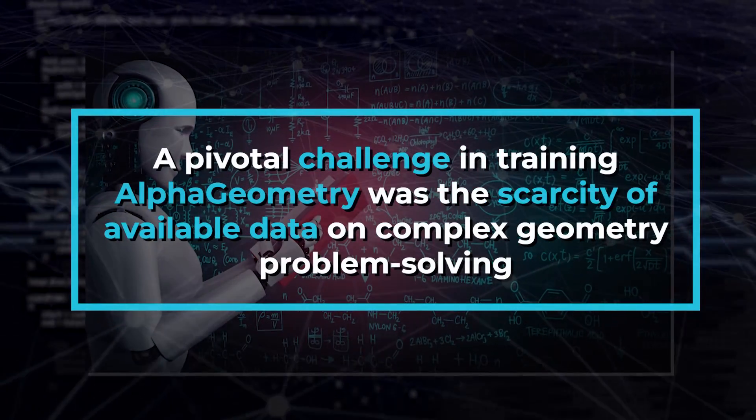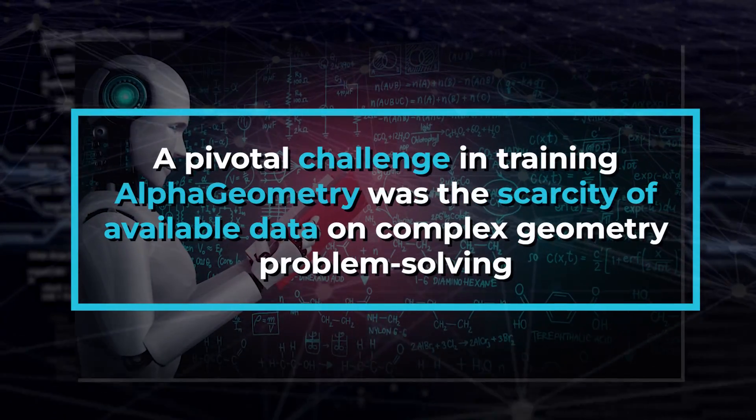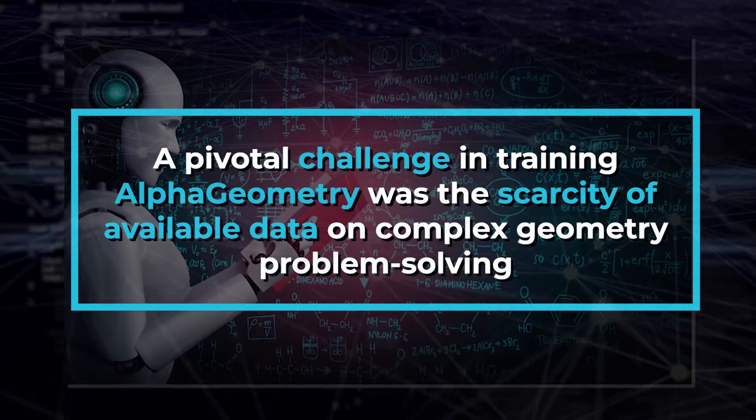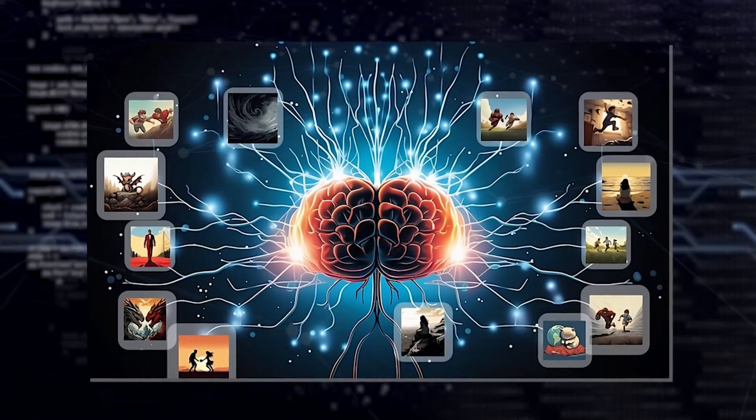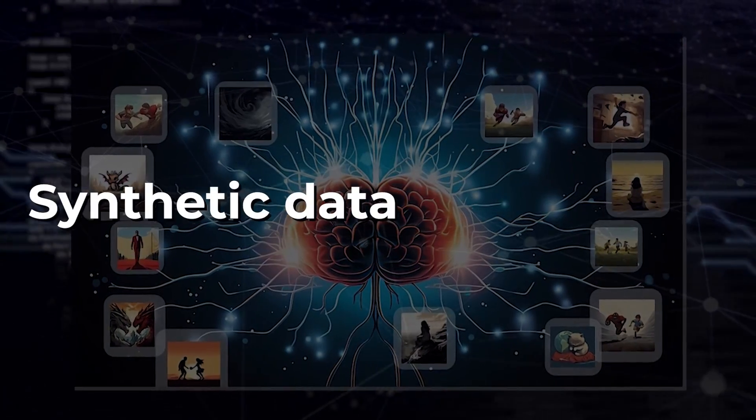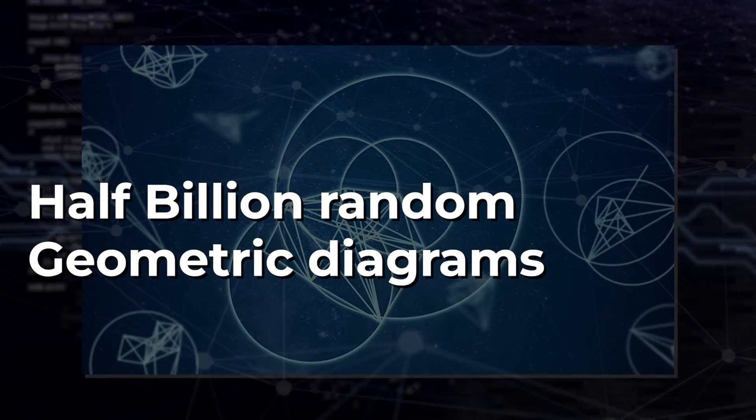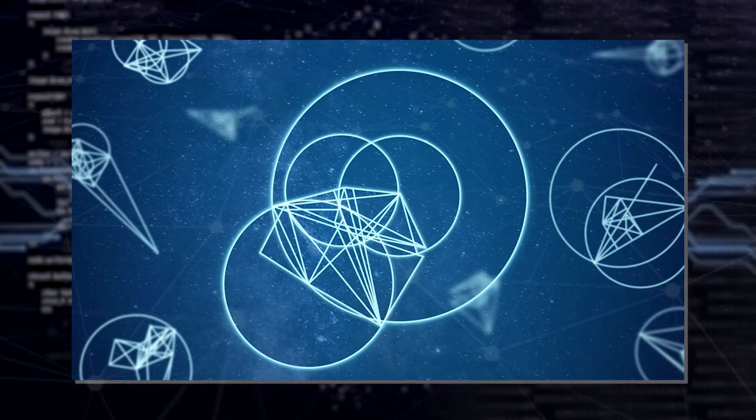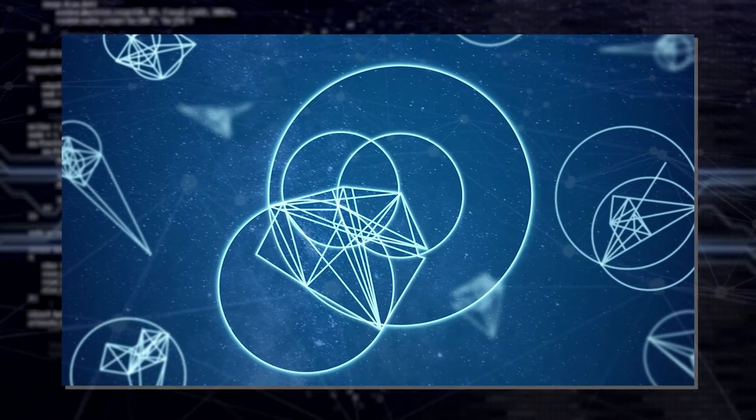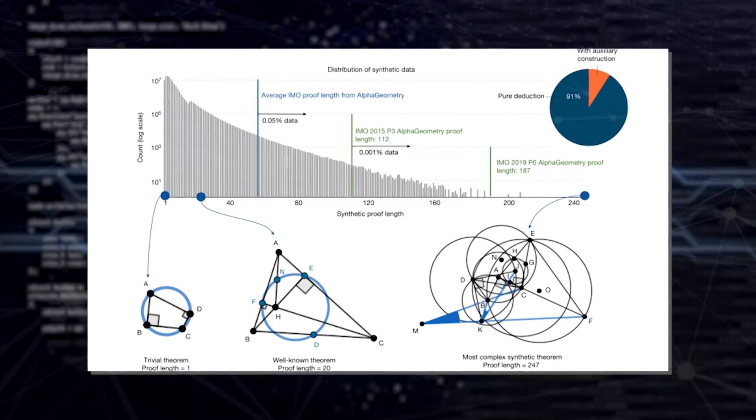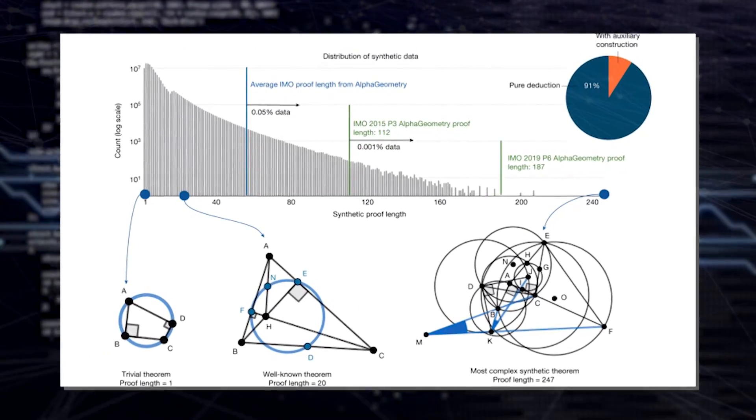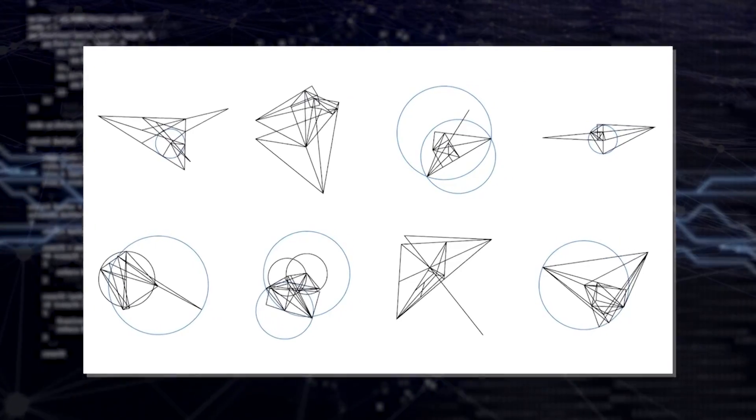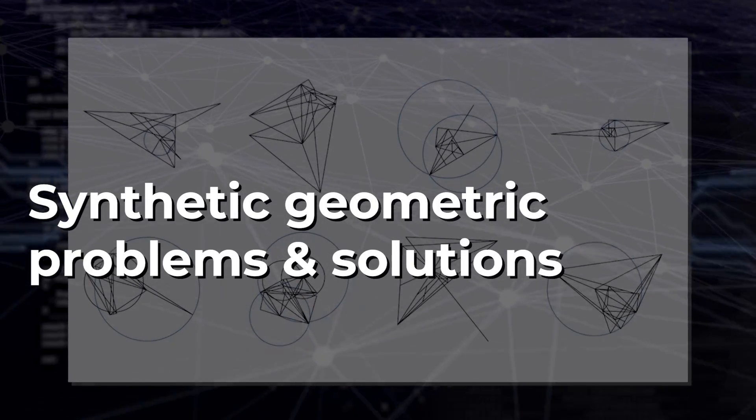A pivotal challenge in training Alpha Geometry was the scarcity of available data on complex geometry problem solving. To address this, DeepMind took an innovative approach by generating synthetic data. They created nearly half a billion random geometric diagrams, each a mini-universe of geometric relationships and properties. The symbolic engine then analyzed these diagrams, extracting insights and relationships, forming a vast dataset of synthetic geometric problems and solutions.